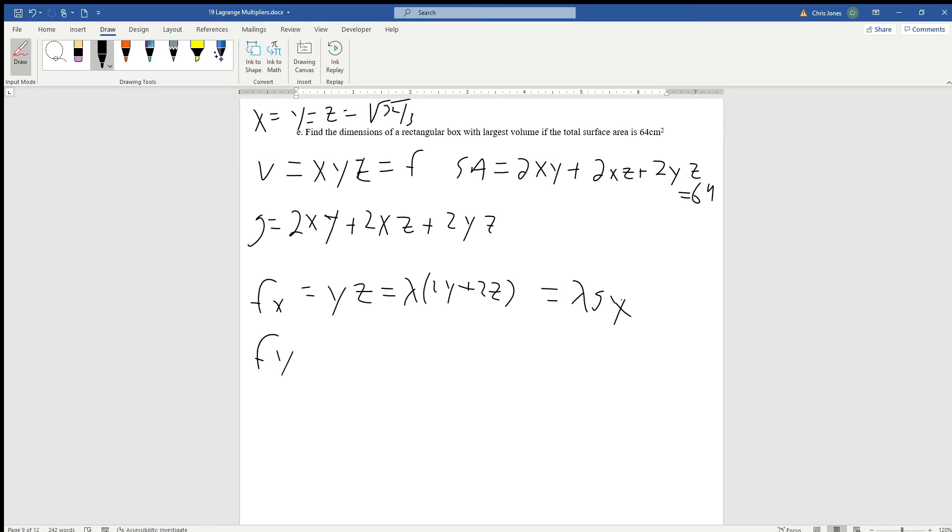f_y, that's just going to be equal to xz, which is going to be equal to lambda times the derivative with respect to y of g, and that's going to be 2x plus 2z. And then finally f_z is going to suggest that xy is going to be equal to lambda times 2x plus 2y.